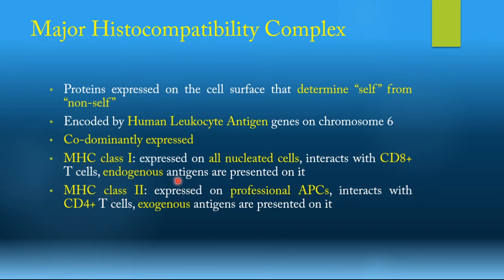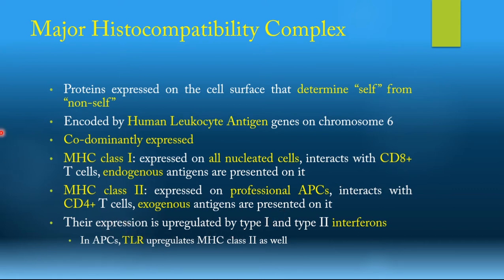MHC class 2, on the other hand, is expressed only on professional antigen-presenting cells, or APCs. Antigen-presenting cells will not only express class 1 but also express class 2 MHC. It interacts with CD4-positive T cells, helper T cells, and presents exogenous antigens — usually from a bacterium infecting the body. The expression of MHC molecules is upregulated by type 1 interferons like interferon alpha and beta, and type 2 interferons like interferon gamma. In antigen-presenting cells, toll-like receptors will also upregulate MHC class 2 specifically.